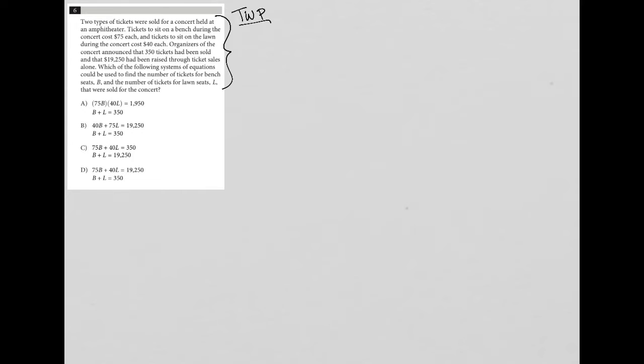The next sentence says tickets to sit on a bench during the concert cost $75. So that's my first quantitative information. I'm going to say bench equals $75. And of course, we're talking about tickets. Tickets to sit on the lawn during the concert cost $40. So lawn equals $40.